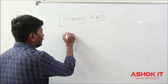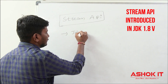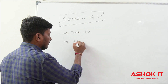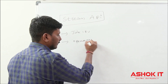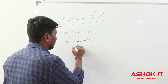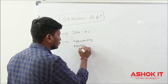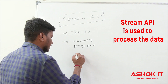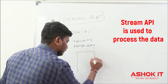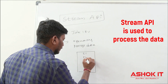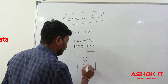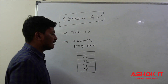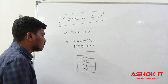Stream API was introduced in JDK 1.8. Using this Stream API we can perform some operations on the data — we can also say Stream API is mainly used to process data. For example, I'm going to take some employee objects to represent a group of objects. In Java we have collections, which are used to store data.